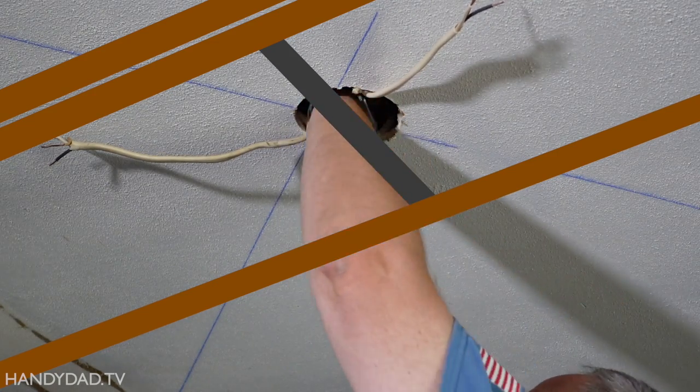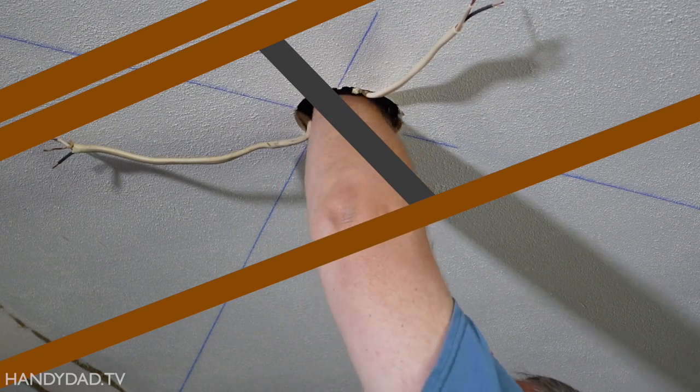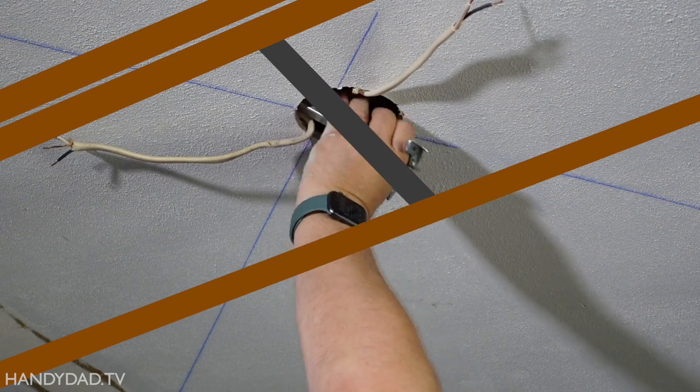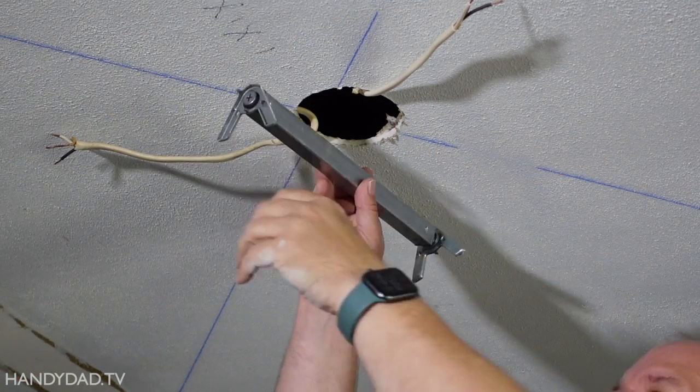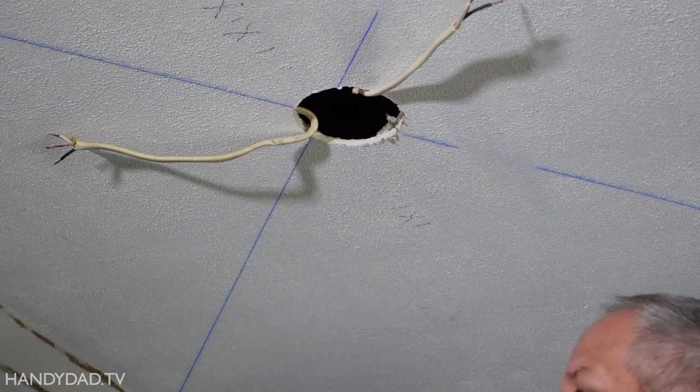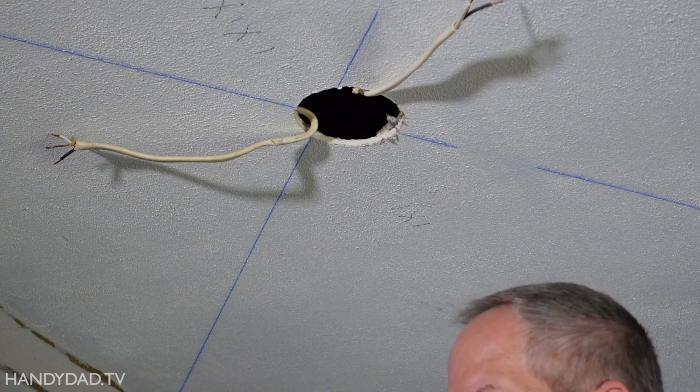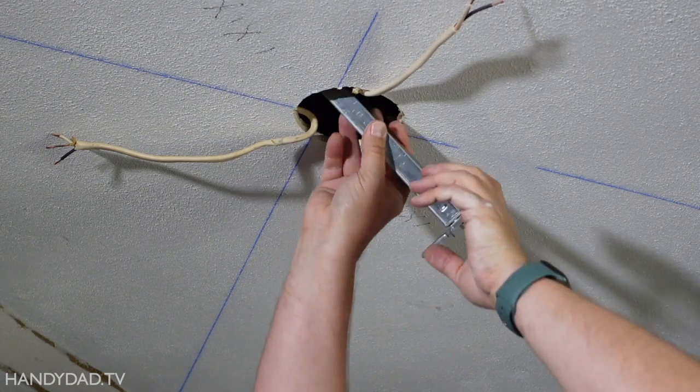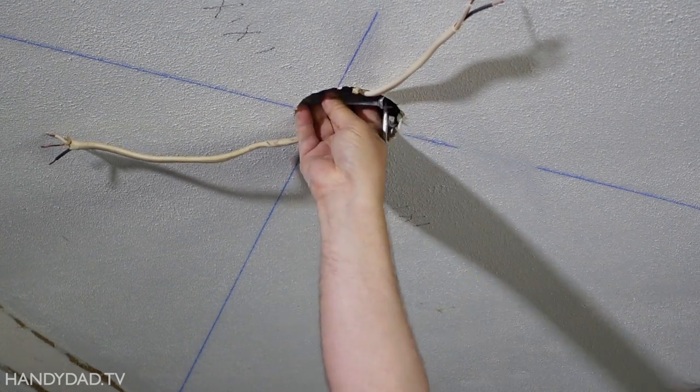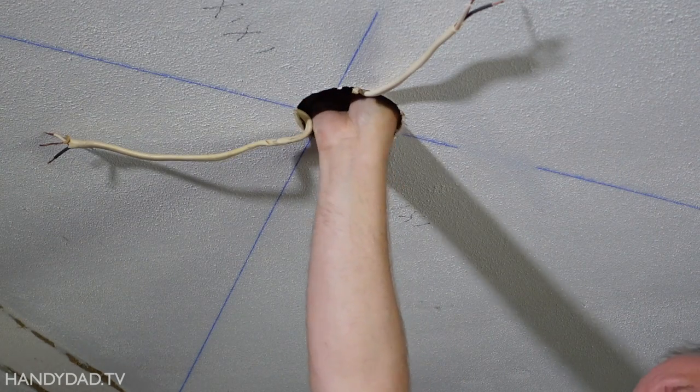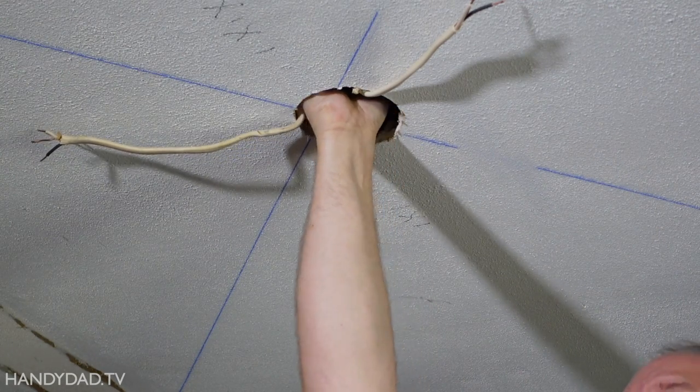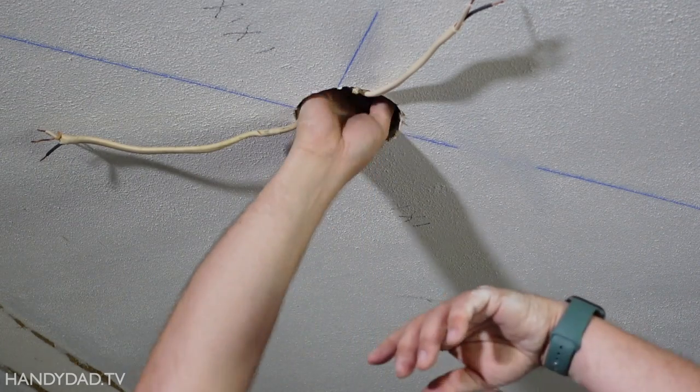But I'm running into a problem here because that cavity is a little bit tight because I've got two joists on that one side. Oh baby, it might be in trouble here. Oh, just makes it. Wow.